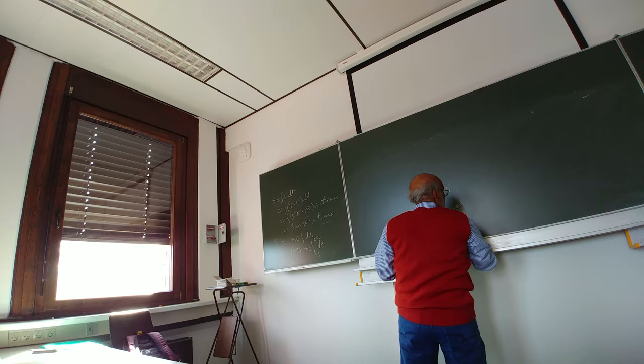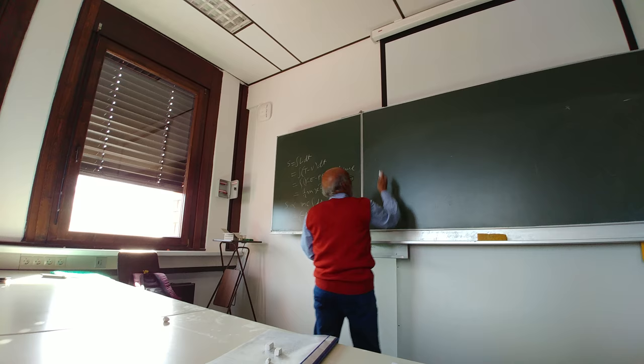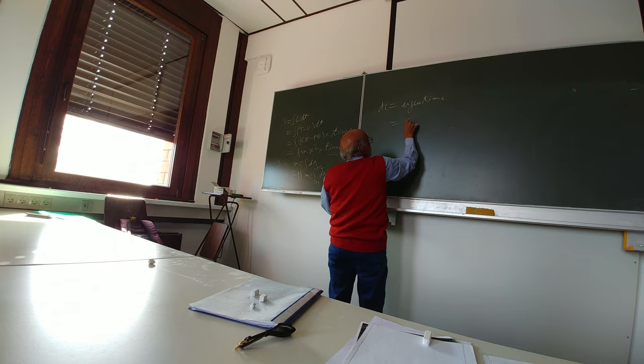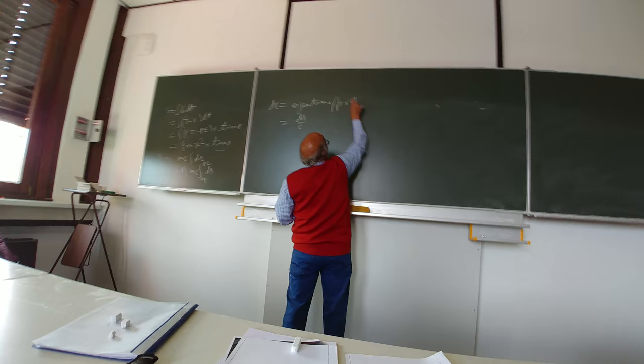And so now dτ is the eigen time. And this is equal to dS upon c. Eigen time is also called the proper time.